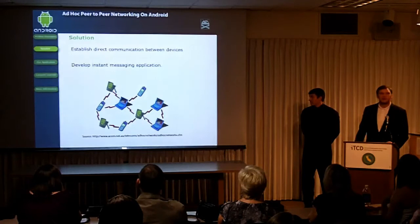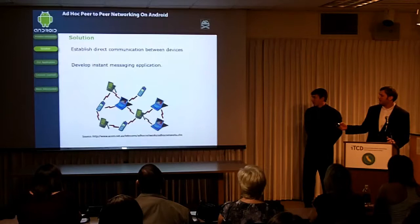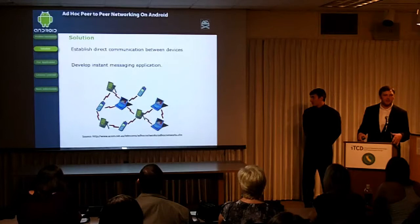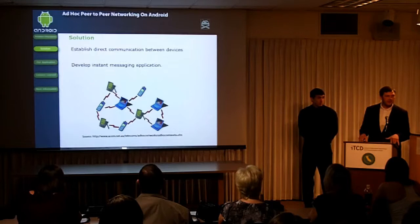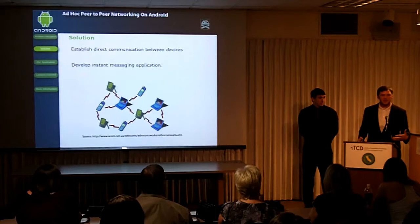Our solution was to establish direct communication between phones. We made an ad hoc network — this picture shows the concept. Each device on the network works as an end device and also a router, so each device will forward data or messages to any device on the network. Once we have this network in place, we want to develop an instant messaging application on top of it, so that we can completely bypass Wi-Fi access or the cell tower and not need any infrastructure in place to communicate between phones.